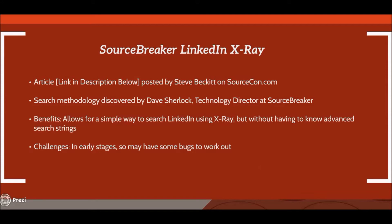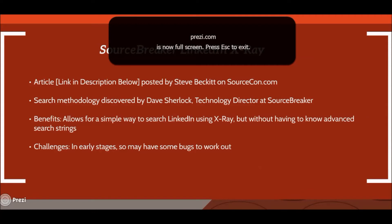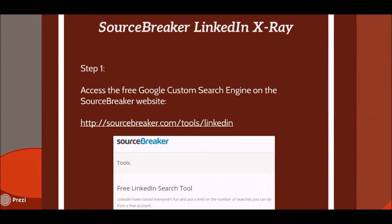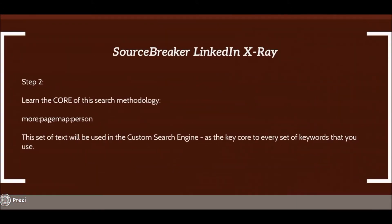The challenge is that it's still in its early stages, so there will be some bugs as you come across different search methodologies — that's just a normal part of the process. I've broken today's video into four steps. Step one is super easy: you need to access the Google Custom Search Engine that Source Breaker has built for you at sourcebreaker.com/tools/linkedin — I'll include that link in the description below.